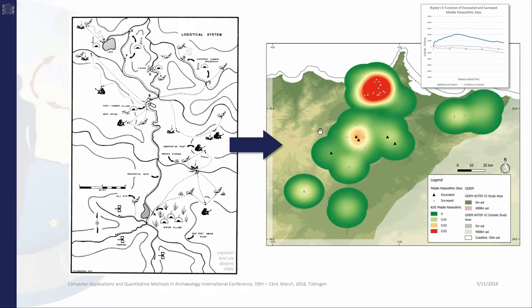A well-known example is the forager-collector model presented by Lewis Binford in the 1980s. He showed that land use is tied to mobility, especially when dealing with mobile hunter-gatherer societies.